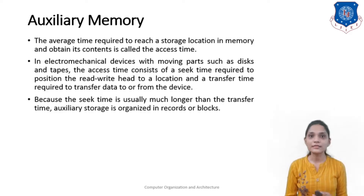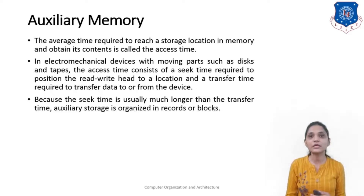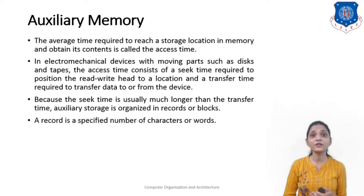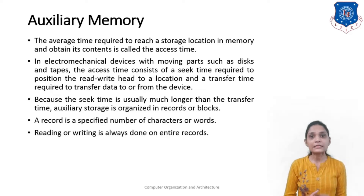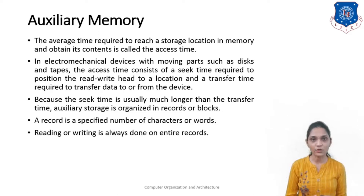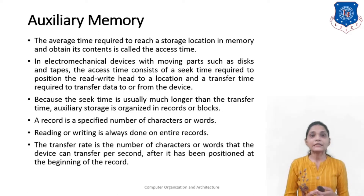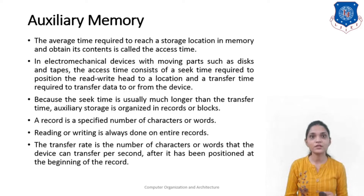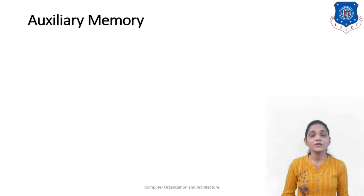Because the seek time is usually much longer than the transfer time, auxiliary storage is organized in records or blocks. A record is a specific number of characters or words, and reading or writing is always done on an entire block. The transfer rate is the number of characters or words that the device can transfer per second after it has been positioned at the beginning of its record.